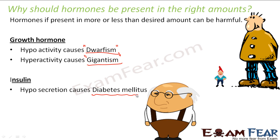If insulin is secreted in the right amount, it will always control the level of glucose — however much the level tries to increase, insulin will control it. You might ask: does everyone suffering from diabetes have hyposecretion of insulin? There are two possibilities: either the secretion of insulin is less, or the intake of sweets is more. If you take in more and more sweet foods with more glucose, even if insulin is secreted in the right amount, it may not be able to handle that high level of glucose. So if you have a normal diet and insulin is secreted in the right amount, the blood glucose level will also be right.